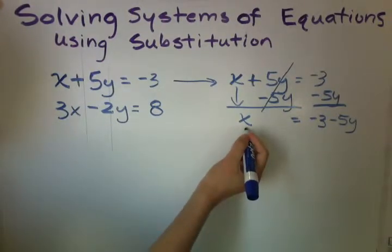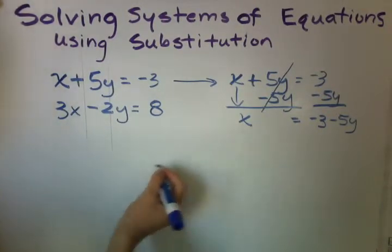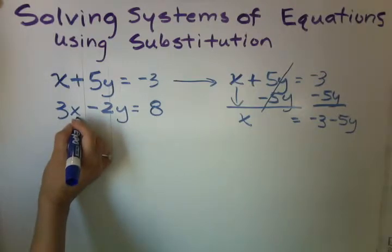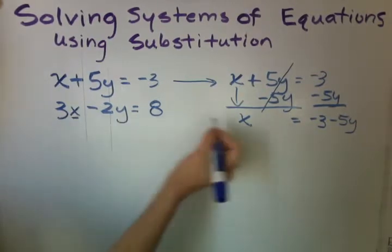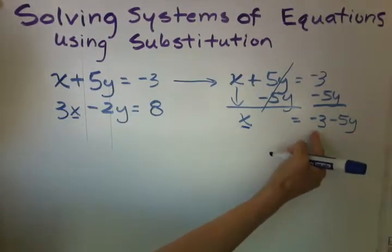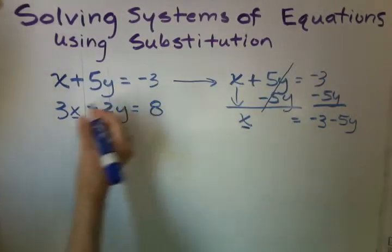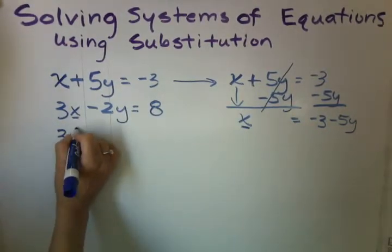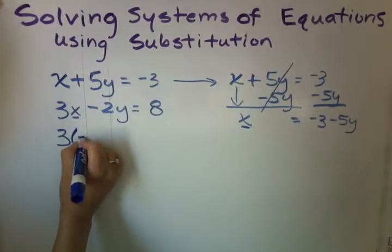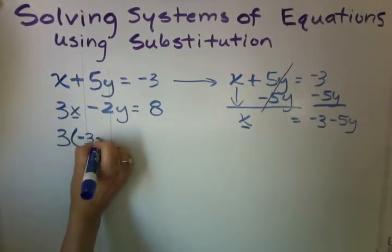So now that we have the x isolated, we can substitute it for this. This x is now negative 3 minus 5y. So we rewrite it and we always put it in parentheses so that we don't forget to distribute later on.